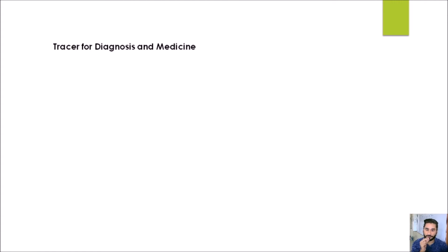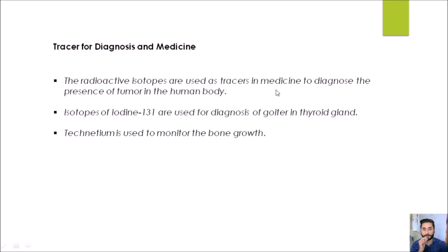The second use is as a tracer for diagnosis and medicine. Diagnosis means finding out the cause or disorder in the body. Radioactive isotopes are used as tracers — they are mixed with medicines, which travel to the tumor cells and get distributed in the body. These tracers can then be detected because they produce radiations, which can be scanned using machines like MRI. Iodine-131 is used for treating goiter, a disorder of the thyroid gland, and technetium is used to monitor bone growth.